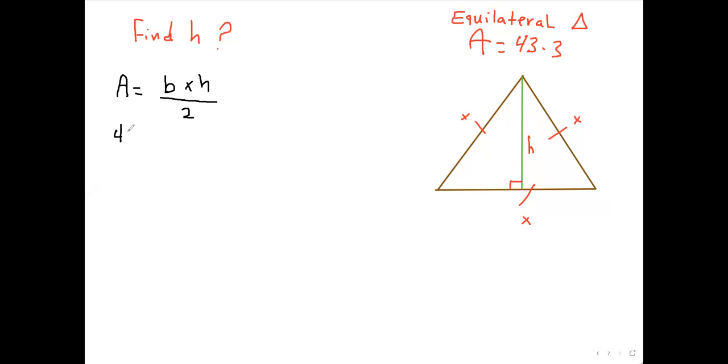The area is 43.3 equals, and we designated each side here by x because it's an equilateral triangle, so it's the base, which is this base right here, which is x times h over 2. And then I'm just going to cross multiply the 2, and I'm going to get 86.6 equals x times h.